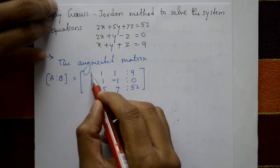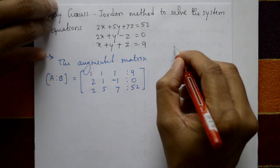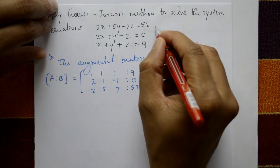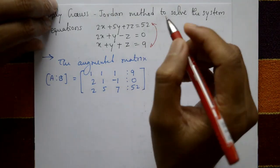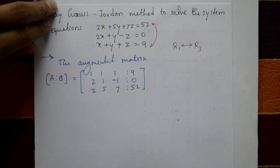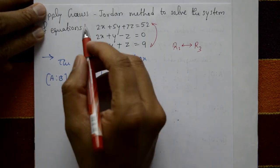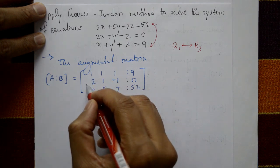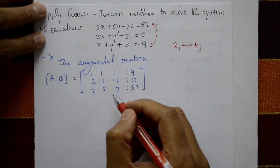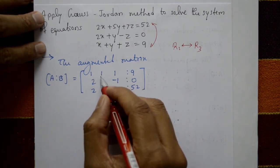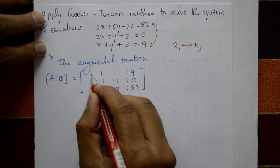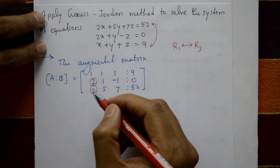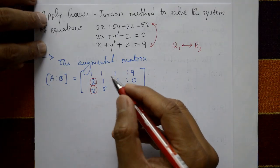It is convenient to have the leading coefficient equal to 1, so we interchange R1 and R3. In the Gauss-Jordan method, this matrix is reduced to a diagonal matrix. The first step is to make the elements below a11 equal to zero.